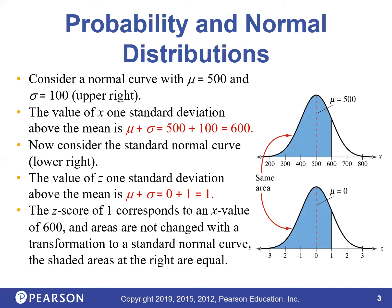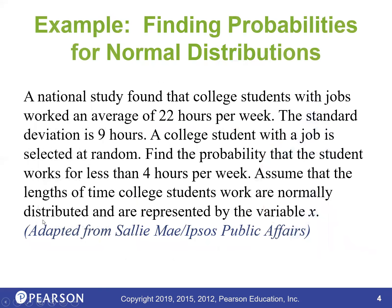Let's find probabilities for the normal distribution. A national study found that college students with jobs worked an average of 22 hours per week, with a standard deviation of 9 hours. A college student with a job is selected at random — what's the probability that the student works less than 4 hours per week? Assume the length of time is normally distributed, represented by variable X.